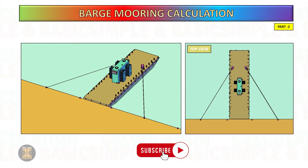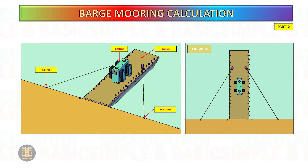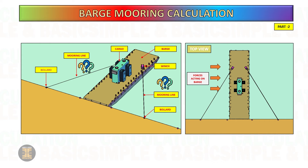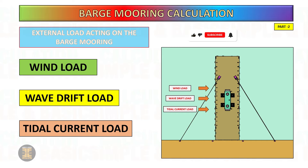This video serves as a continuation of the previous calculation, focusing on the calculation of the necessary mooring line capacity for a barge. Its purpose is to demonstrate the process of manually calculating mooring requirements. There exists mooring analysis software in the market; nevertheless, its utilization necessitates training and entails associated costs.